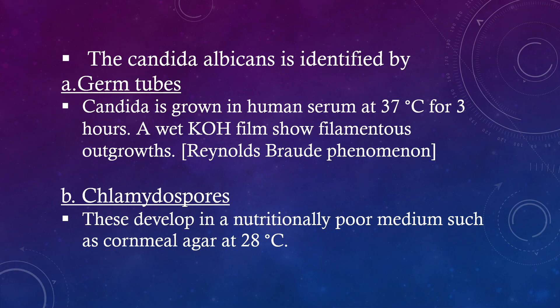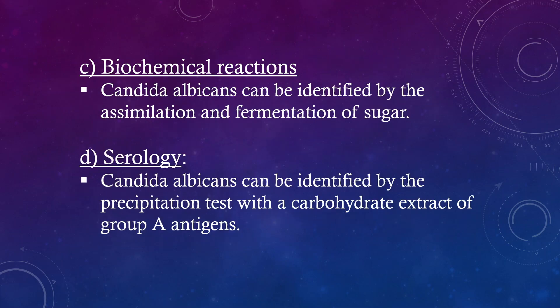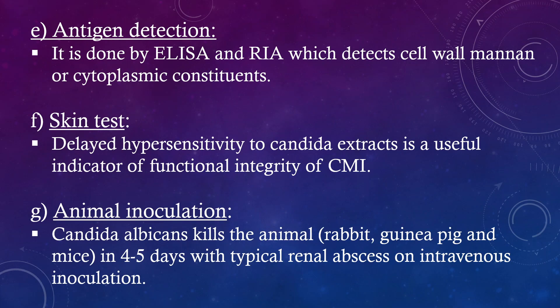Chlamydospores develop in a nutritionally poor medium such as cornmeal agar at 28 degrees centigrade. Biochemical reactions: Candida albicans can be identified by the assimilation and fermentation of sugars. Serology: Candida albicans can be identified by the precipitation test with a carbohydrate extract of group A antigens. Antigen detection is done by ELISA and RIA, which detect cell wall mannan or cytoplasmic constituents.